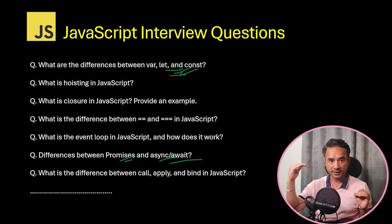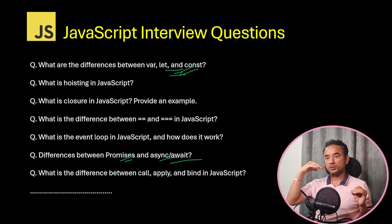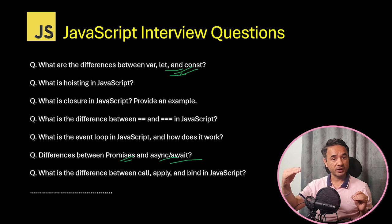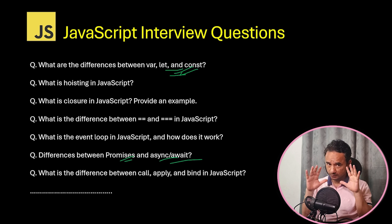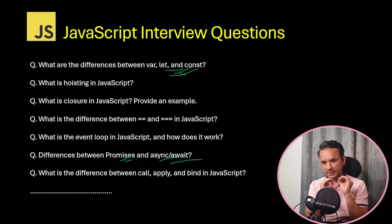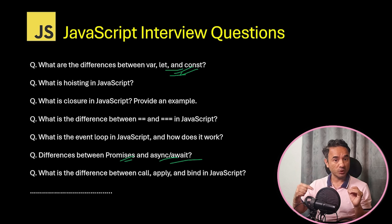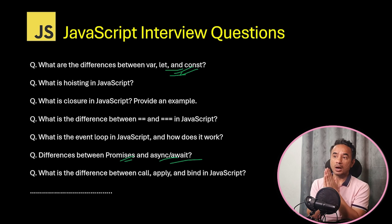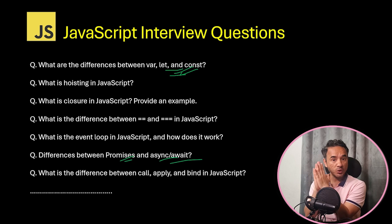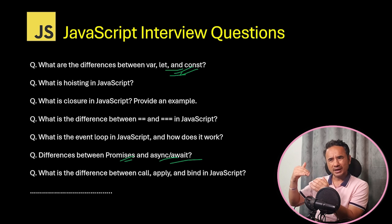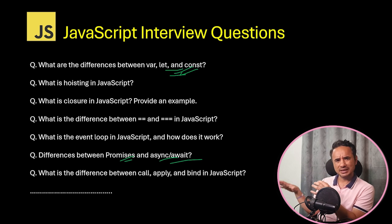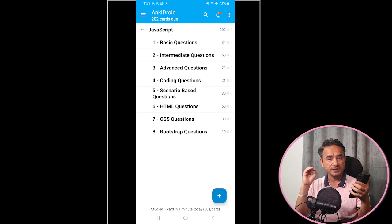That is a very important, high-priority question that needs to be revised more compared to simpler ones. Not every question has the same priority — some complex questions are more likely to be forgotten. So how do we practice in a way that lets us revise complex questions more and simpler questions less?